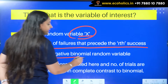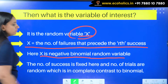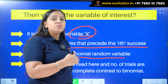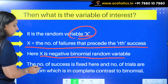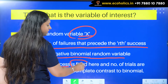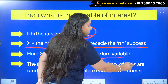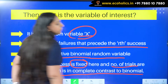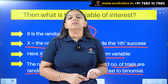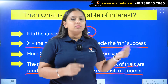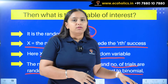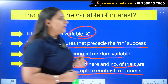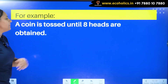X is the negative binomial random variable. One very important characteristic that makes this different from binomial: the number of successes is fixed here, equal to R, whereas the number of trials is random. This is in complete contrast to binomial. The number of successes is fixed but the number of trials is random — I check after how many failures I am getting my fixed number of successes. This random variable X follows the negative binomial distribution.